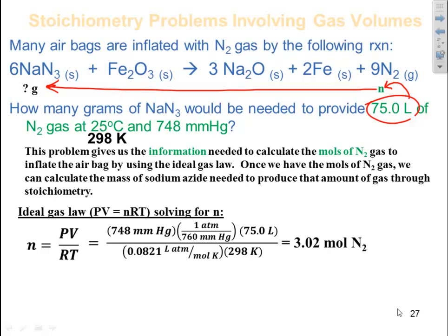Volume is 75 liters divided by R, which is 0.0821 liter atmospheres per mole Kelvin. And 25 degrees C, which we must convert to Kelvin, which is 298 Kelvin. Units cancel. When the units cancel, all that's left is moles, which is in the denominator of a denominator, which then gives me my answer, multiplying my numbers, 3.02 moles of N2.